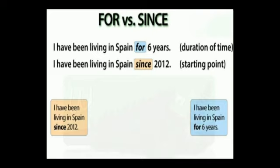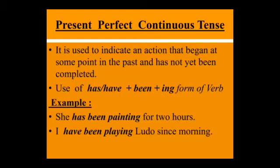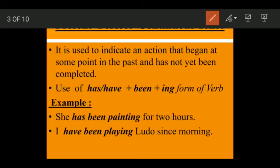Coming back to tenses: first we will talk about present perfect continuous tense. It is used to indicate an action that began at some point in the past and has not yet been completed — something that began sometime in the past but is still going on. For that, we use present perfect continuous tense.